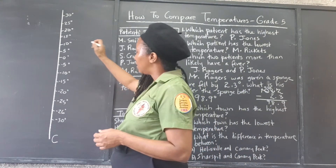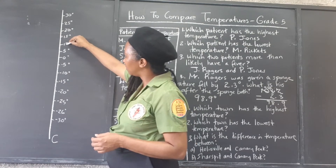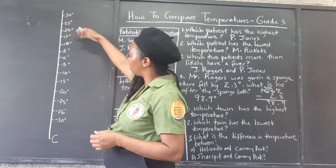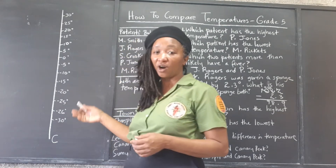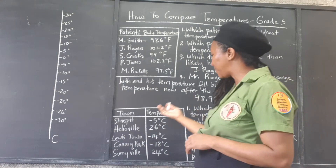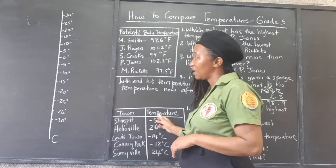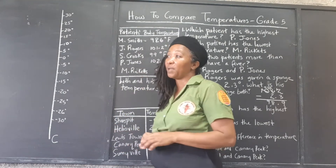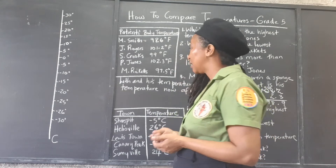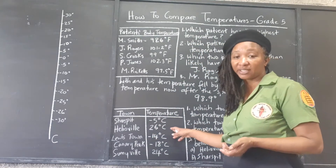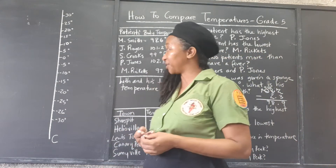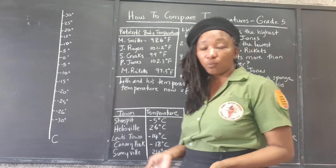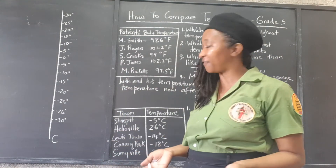Looking at the scale, we have zero degrees as our benchmark — our standard in terms of freezing. Anything above zero means the temperature is climbing and getting hotter; going down means the temperature is falling. So Sharpspit has negative 5 degrees Celsius — that's below zero, meaning it's probably snowing pretty hard. Helio Vale has 26 degrees Celsius, which is pretty close to room temperature, so they're having sunny, fairly moderate days.